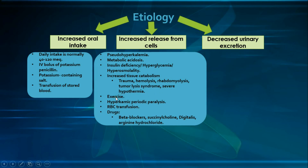During exercise, the exercising muscles release potassium out of the cells due to the physiological role of potassium in causing vasodilation to the exercising muscles. The released potassium in exercise doesn't really enter the systemic circulation in large amounts, but rather stays mostly in the local exercising muscle causing the vasodilation.